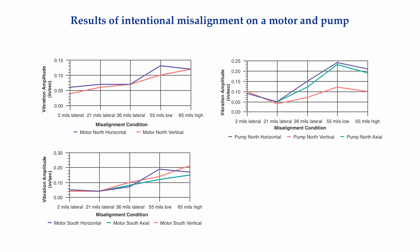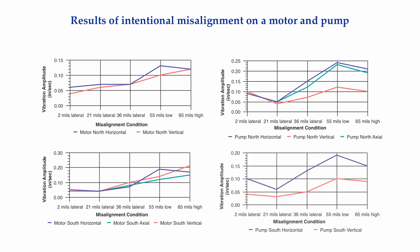At the inboard or coupling end of the pump, when the unit was misaligned 21 mils laterally, the vibration decreased in the horizontal, vertical, and axial directions. At 36 mils of misalignment, the vibration increased in the horizontal and axial directions, but still didn't get back to the well-aligned vibration amplitude in the vertical direction. At 55 mils low, all three amplitudes increased — and this is where the vibration was at its highest amplitude at any bearing. But then, in the worst misalignment condition where the motor was 65 mils high, the vibration decreased. The outboard bearing of the pump had a similar pattern.